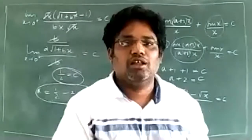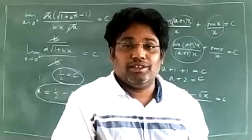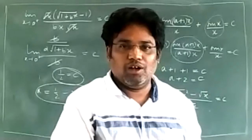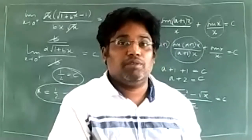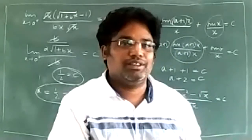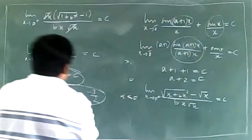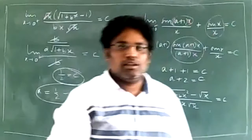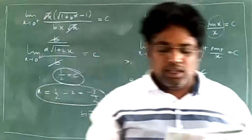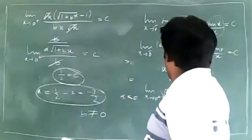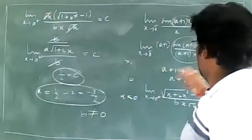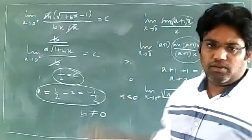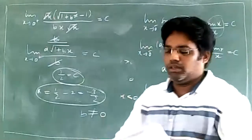Coming to b: b is greater than 0, so b should not be equal to 0. Because it is greater than 0, b is not equal to 0. So the right option is: a equals minus 3 by 2, c equals 1 by 2, and b is not equal to 0. That is option B.